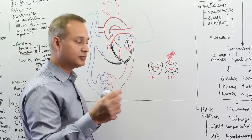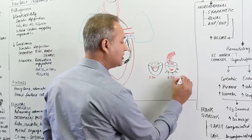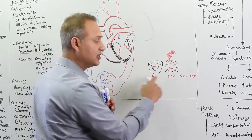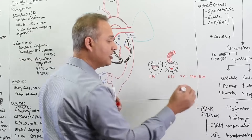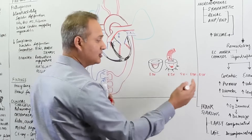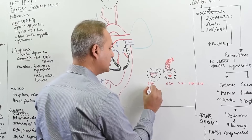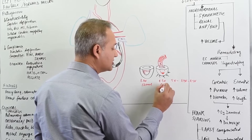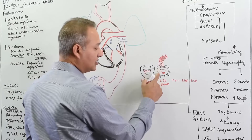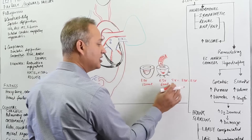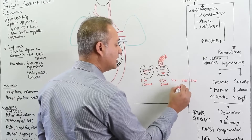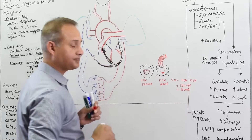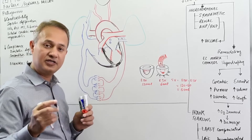Stroke volume equals end diastolic volume minus end systolic volume — that is the original volume we started with minus the volume we are left with. So let's say EDV was 120 milliliters and what we are left with after ejection is 60 milliliters, so 120 minus 60 equals 60 milliliters of stroke volume.